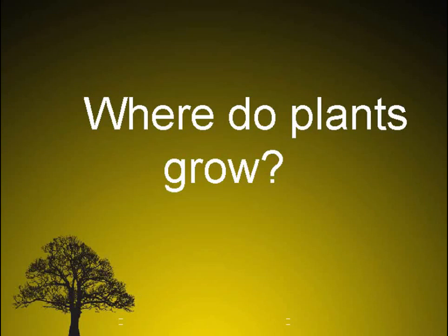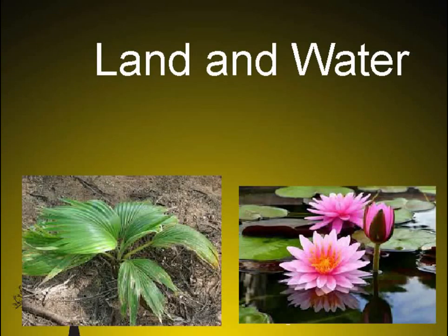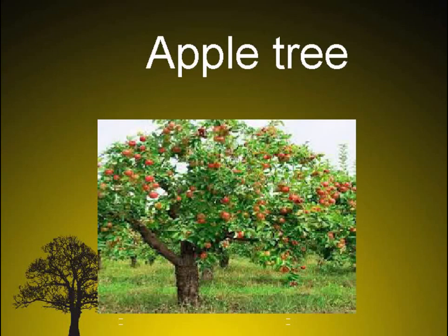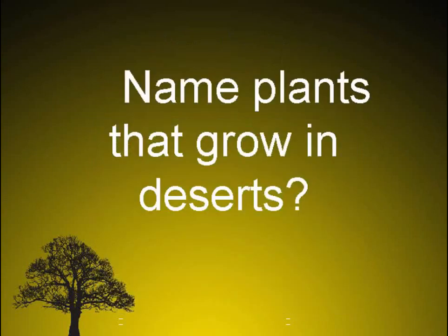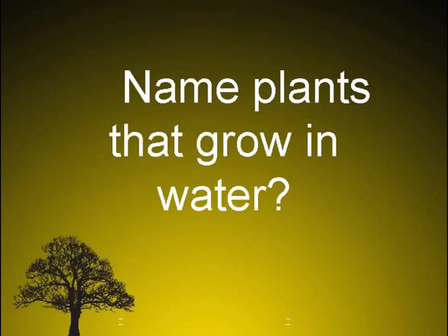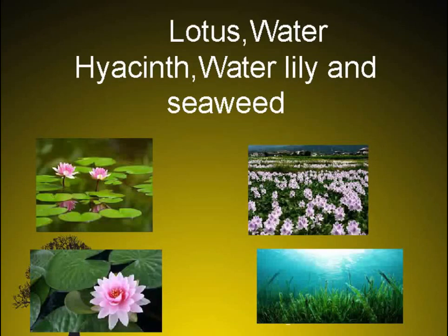Where do plants grow? On land and in water. Name a plant that grows on land. Apple tree. Name plants that grow in deserts. Cactus, date palm. Name plants that grow in water. Lotus, water hyacinth, water lily, and seaweed.